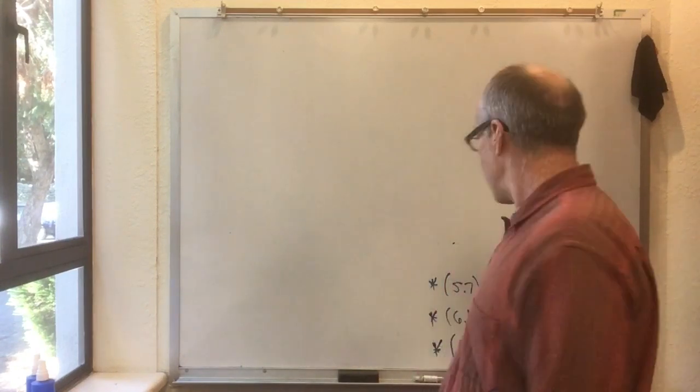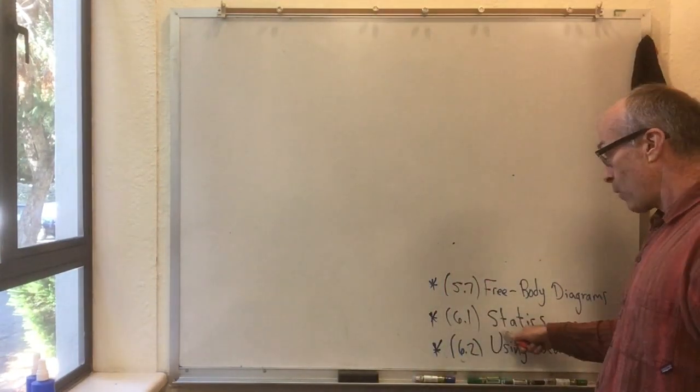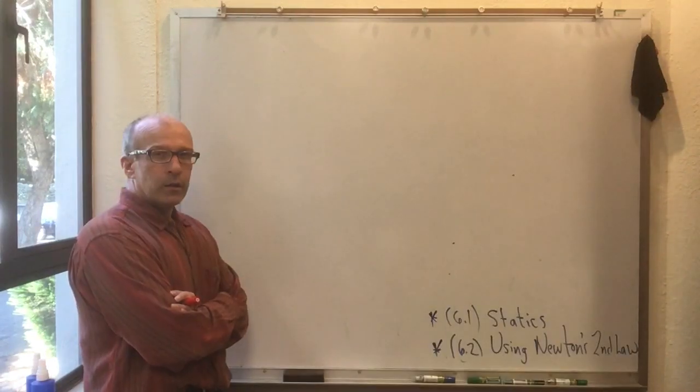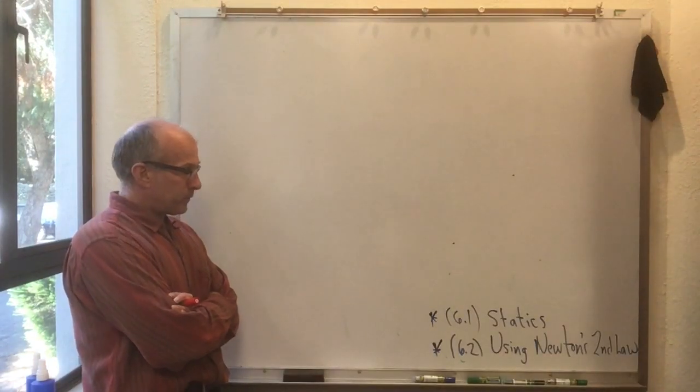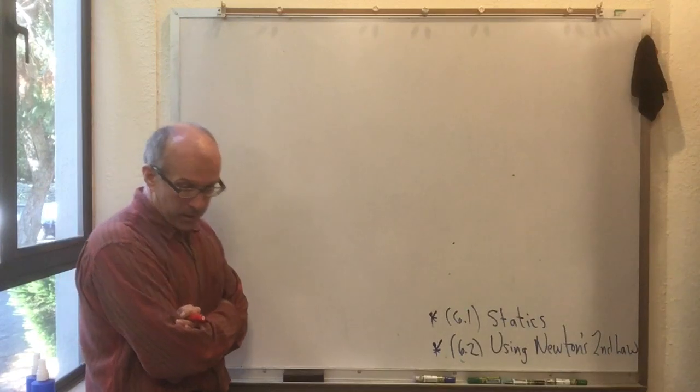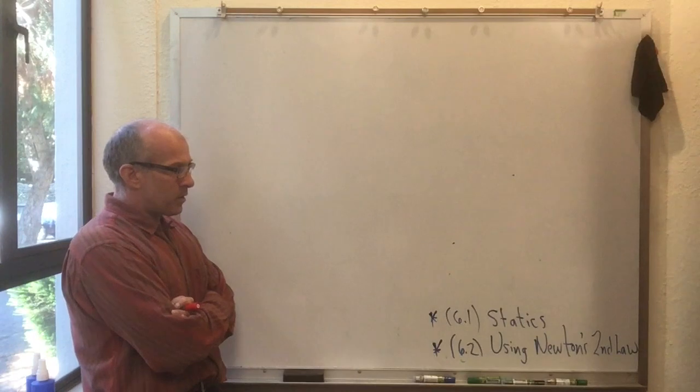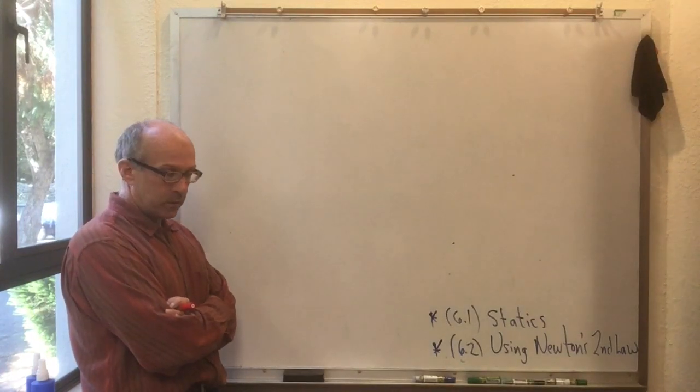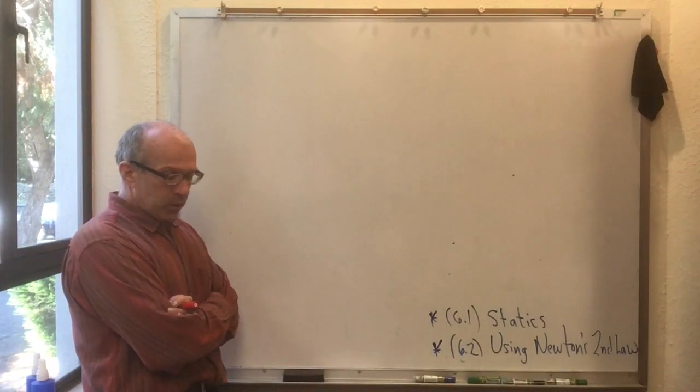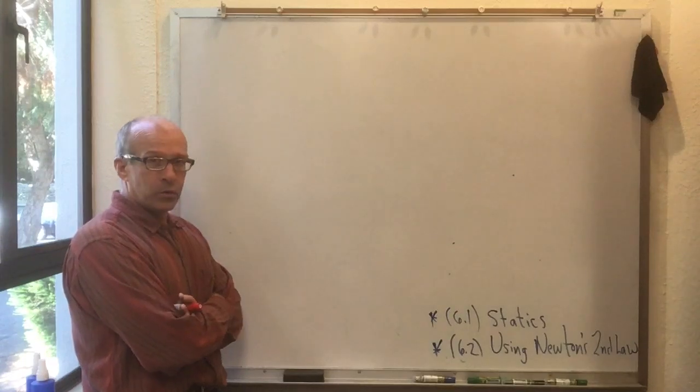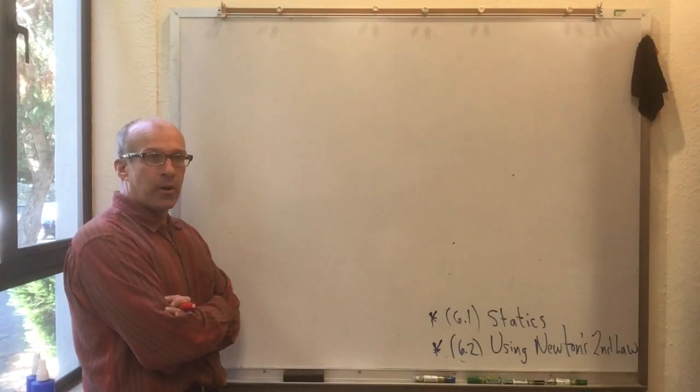And then resume with me with 6.1. So now I'm covering 6.1. And 6.1, Knight calls the equilibrium model. When you're hanging out with engineers, they call it statics. In the equilibrium model, the usual situation is that all the particles are at rest.